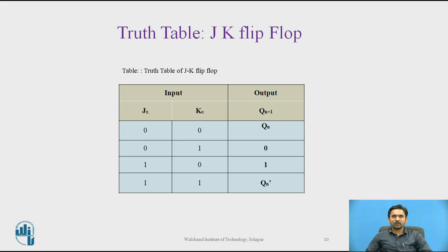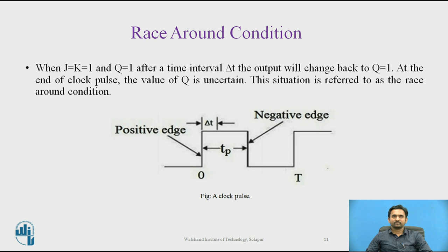The truth table for the JK flip-flop is the same as that of the SR flip-flop when J and K are replaced by S and R respectively, except for the indeterminate case. When J equals K equals 1 and Q equals 1, after a time interval delta-t, the output will change back to Q equals 1. At the end of the clock pulse, the value of Q is uncertain — this situation is referred to as the race around condition.